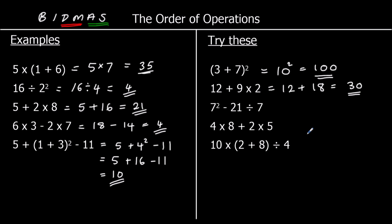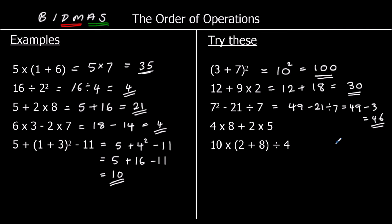The third one: no brackets, but we've got indices — 7 squared. 7 squared is 49. We've now got a division: 21 divided by 7 is 3. So we've got 49 take away 3, which is 46. The fourth one: no brackets or indices, but we've got multiplications. 4 times 8 is 32 and 2 times 5 is 10, so we've got 32 plus 10, which is 42.